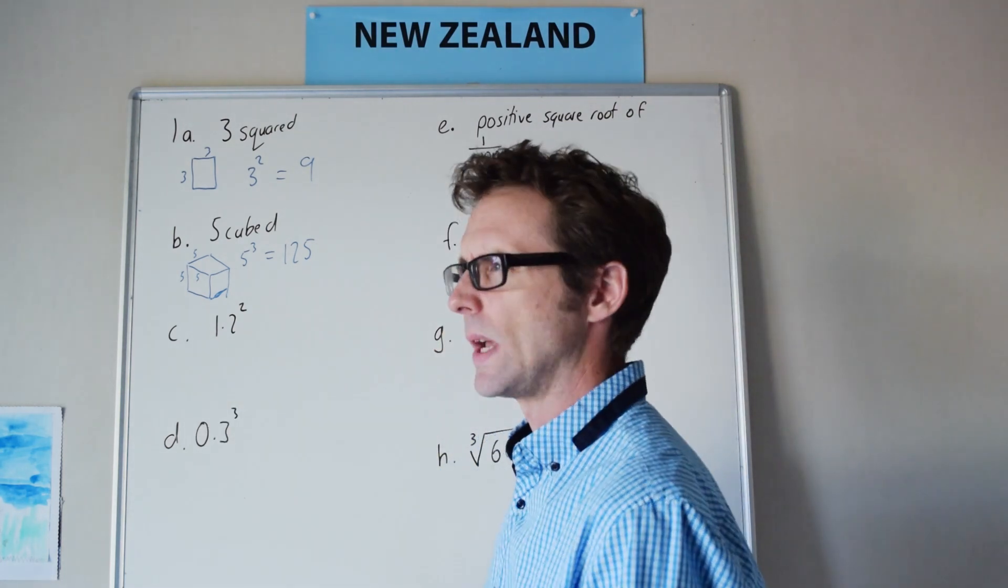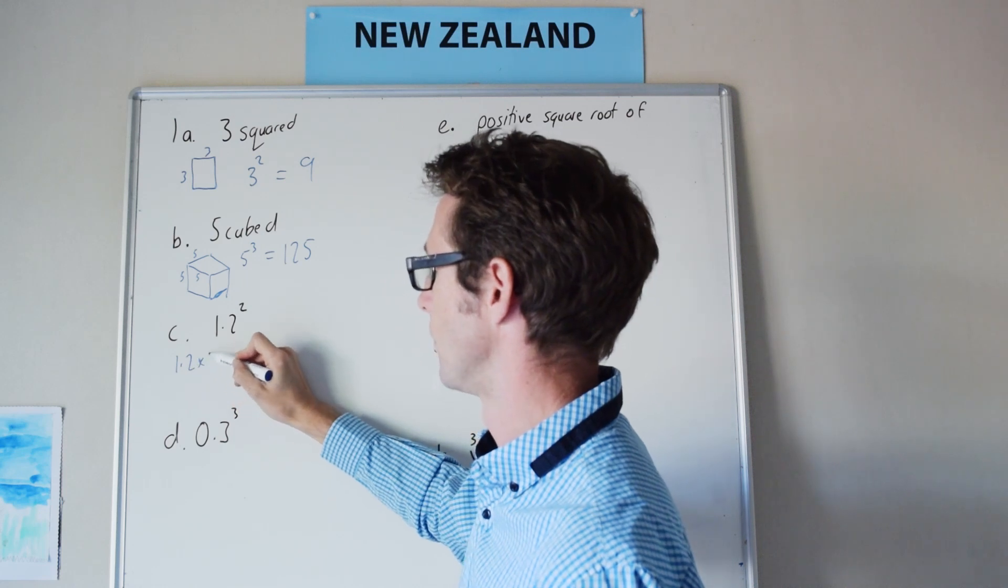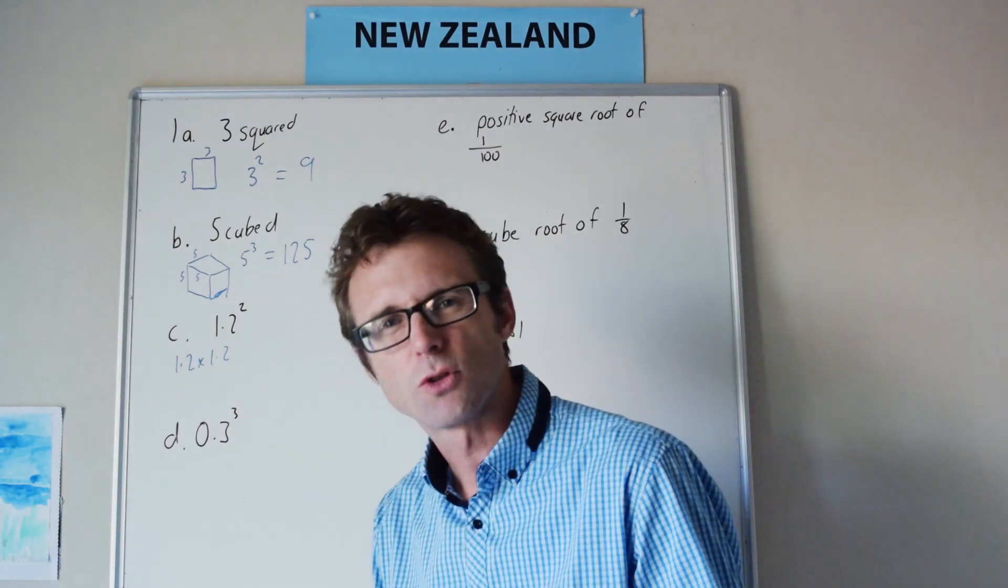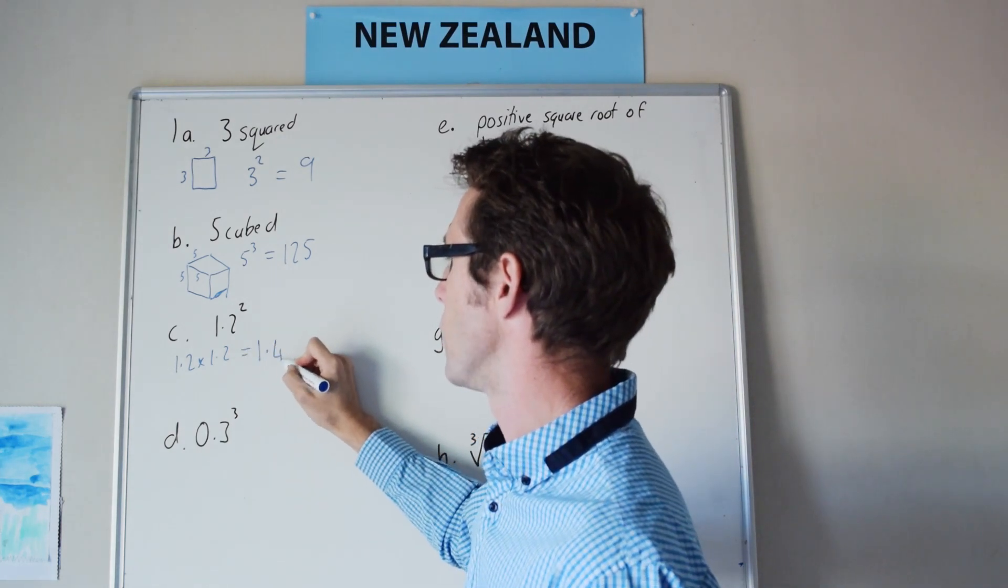1.2 squared, this means 1.2 times 1.2, and you know that 12 times 12 is 144, so 1.2 times 1.2 is 1.44.